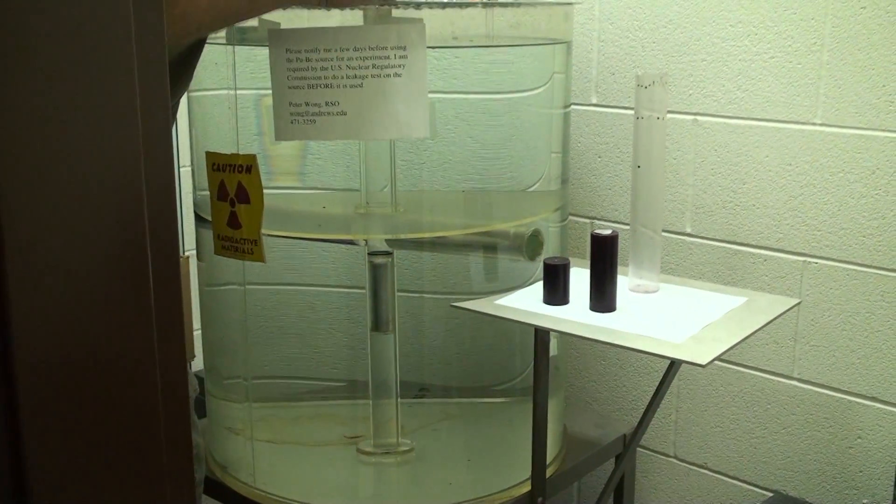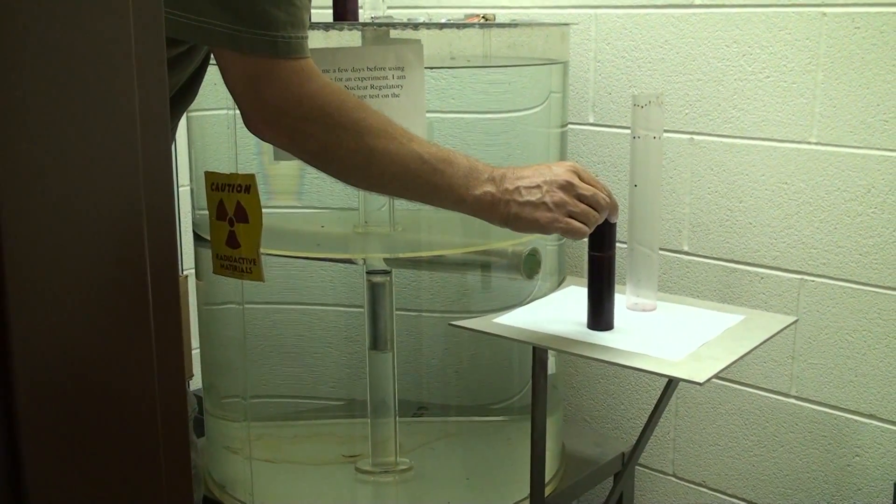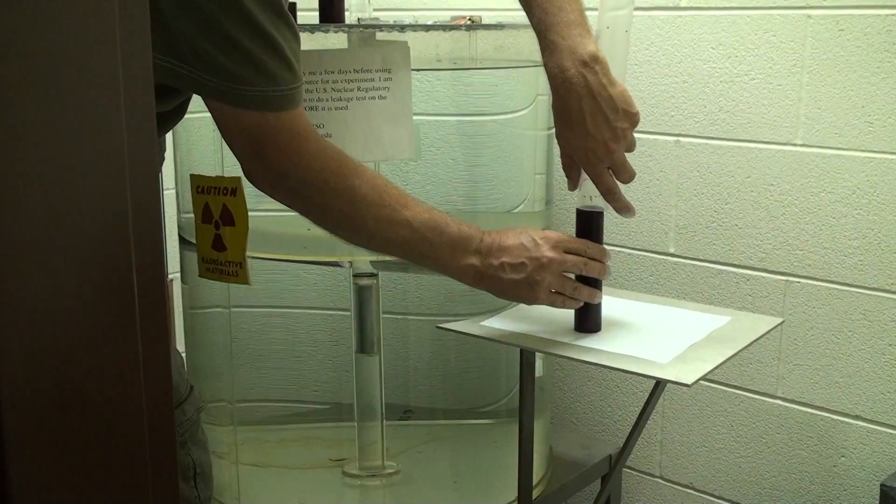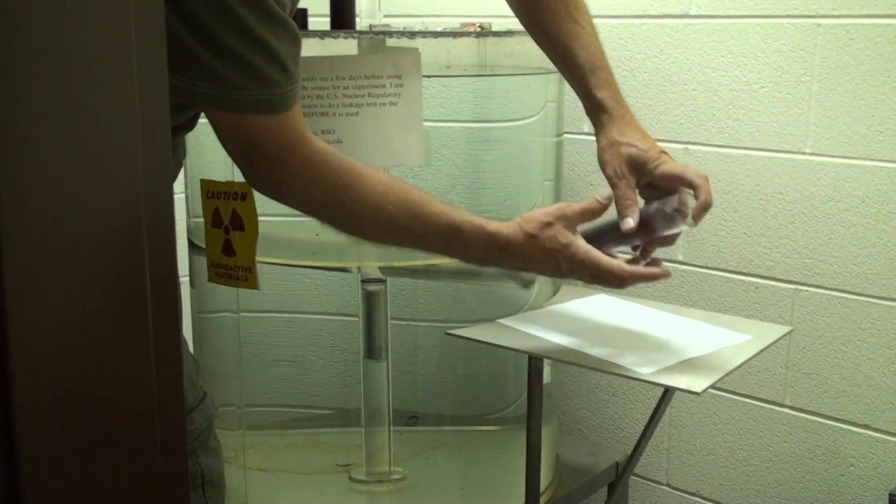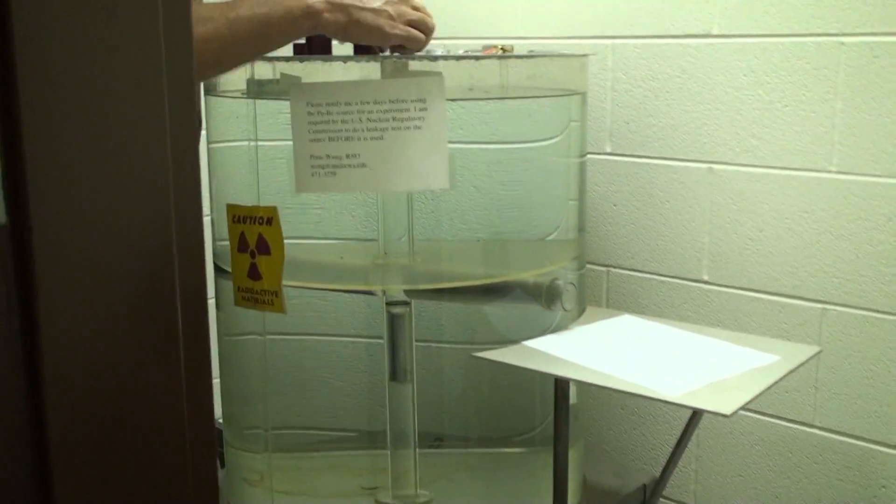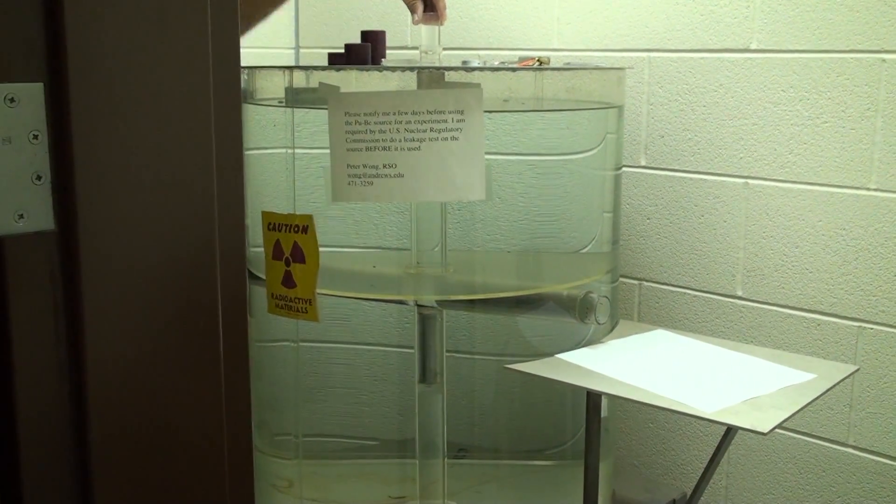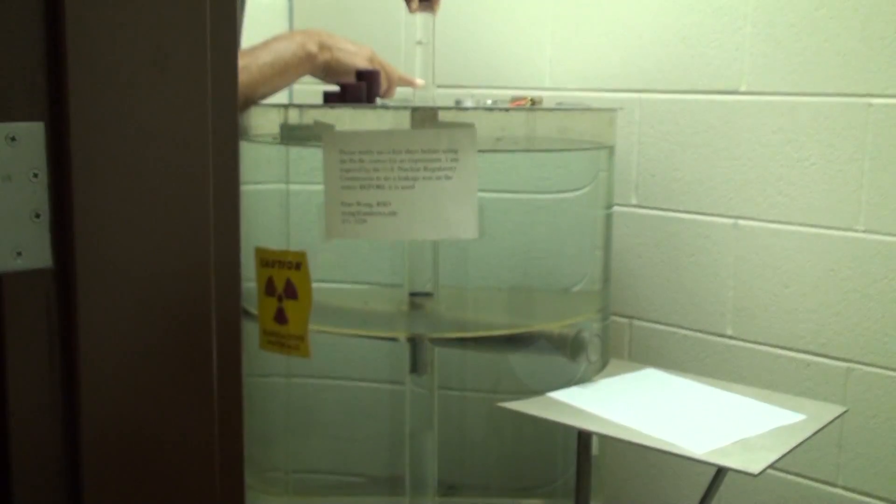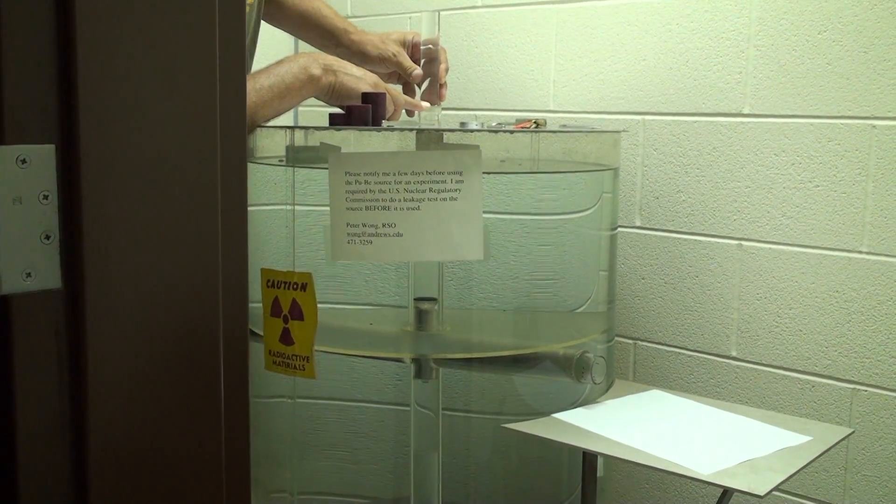Experimentally, we begin by activating the sample by placing it next to a strong source of neutrons inside a container shielded by water. The sample is placed between layers of paraffin to slow the neutrons. We slide the sample toward the source and raise the source so the sample is no longer shielded by the water.